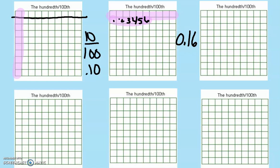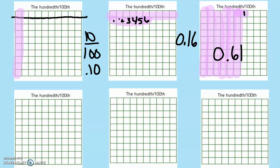Now you tell me what the decimal is for the next shaded example — pause the video if you need to. If you said this is six full rows and one extra unit, that's 0.61 — sixty-one hundredths. When I say the decimal I say 'and,' like 'a dollar and sixty-one cents.' For math, when you see a decimal point you say the word 'and.' So that's six rods in the tenths place — like six dimes — and one unit in the hundredths place, like one penny.